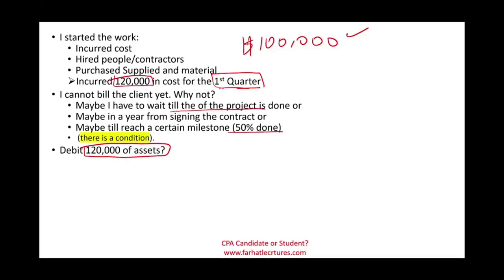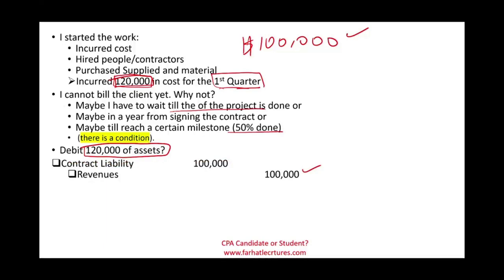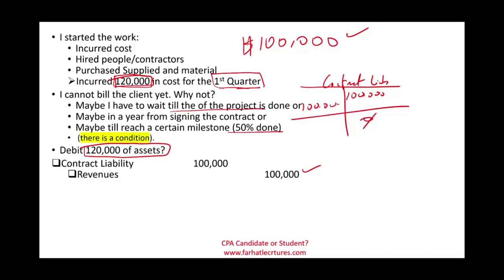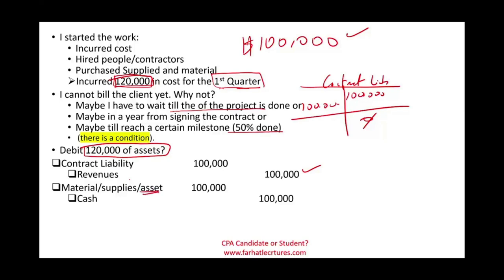I already did $120,000 worth of work, and we'll assume this is all revenue. The first thing I do, since I performed the work, is debit my contract liability and remove that liability for $100,000 and record $100,000 in revenue — removing the contract liability that was created earlier. Now for the cash: they gave me $100,000 in cash. With that cash I bought materials, supplies, and payroll. I debited an asset account for $100,000 and credited the cash, because I'm building inventory for Adam. So whether it's material, supplies, or payroll, it's all debiting some sort of an asset.